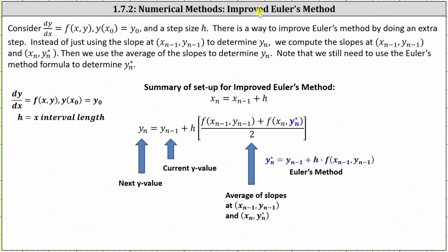Welcome to a lesson on the improved Euler's method for approximating the solution to an initial value problem. Consider dy/dx equals f of x comma y, with y of x sub zero equals y sub zero and a step size of h. There's a way to improve Euler's method by doing an extra step. Instead of using the slope at x sub n minus one comma y sub n minus one to determine y sub n, we compute the slopes at x sub n minus one comma y sub n minus one and x sub n comma y sub n, and then we use the average of the slopes to determine y sub n.